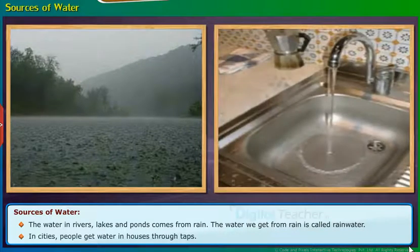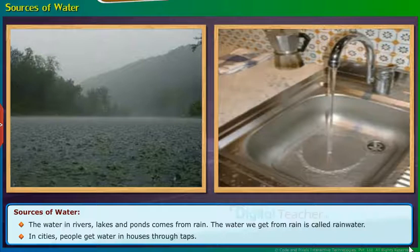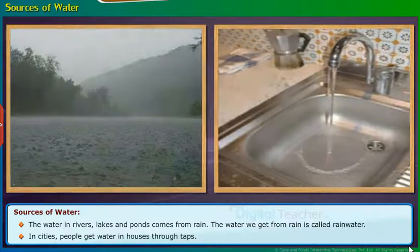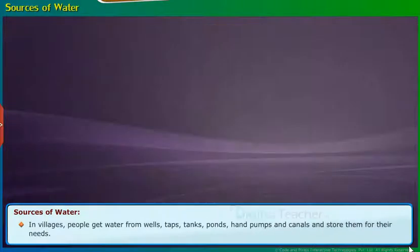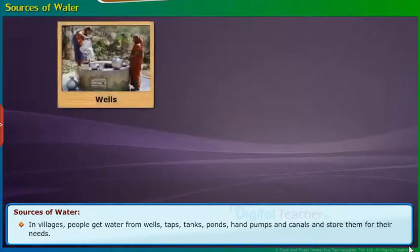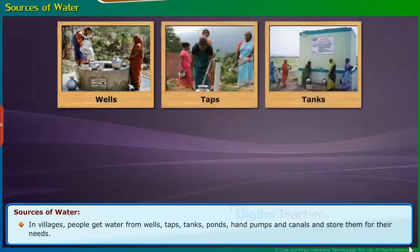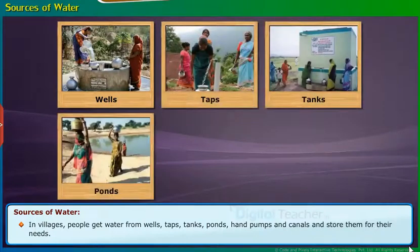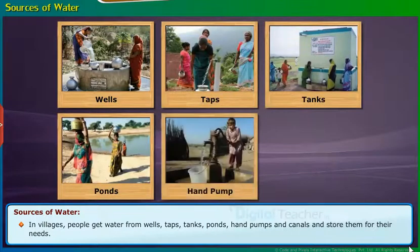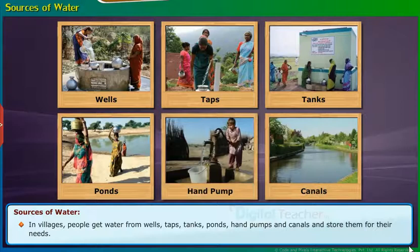In cities, people get water in houses through taps. In villages, people get water from wells, taps, tanks, ponds, hand pumps, and canals, and store them for their needs.